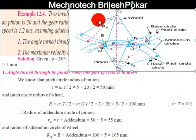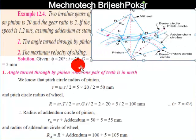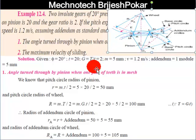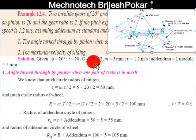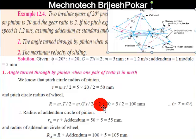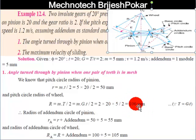Capital R is the pitch circle radius of the wheel, using R = (m × T) / 2. Capital T is not given directly, but the gear ratio G = T / t, so T = G × t. Therefore R = (m × G × t) / 2 = (5 × 2 × 20) / 2 = 100 mm. So capital R equals 100 mm.